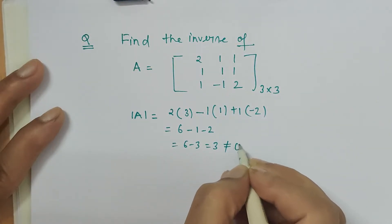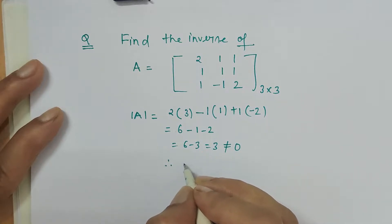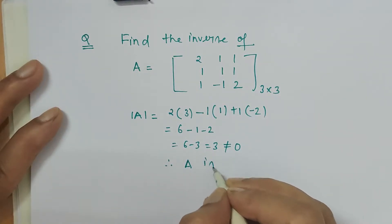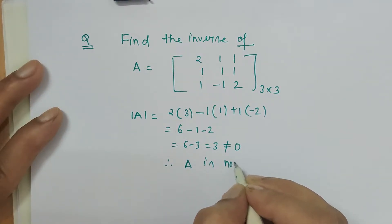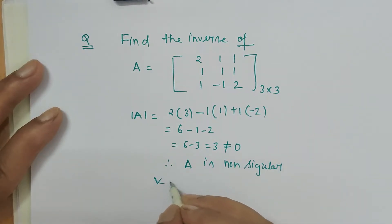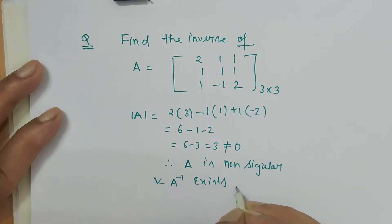The determinant is not equal to 0, therefore the matrix is non-singular and A inverse exists.